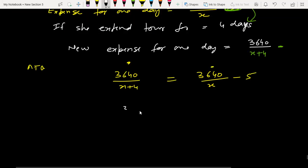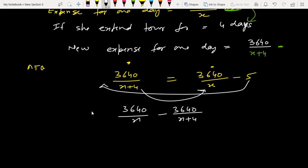So 3640 upon x minus 3640 upon x plus 4 equals 5.